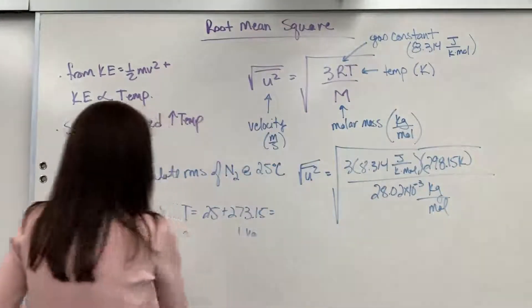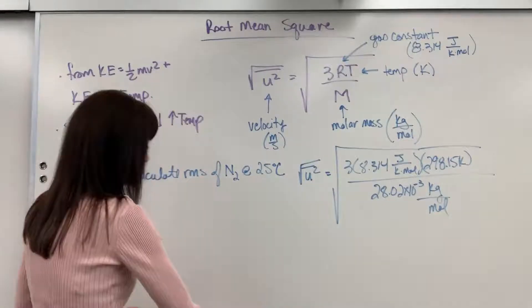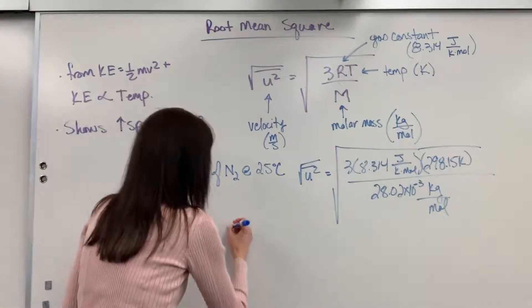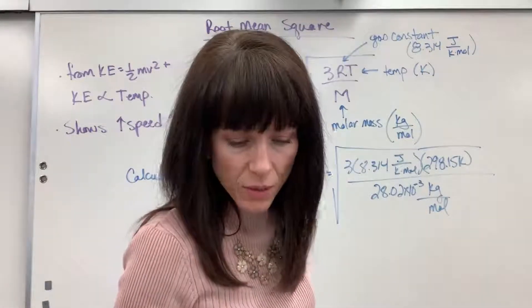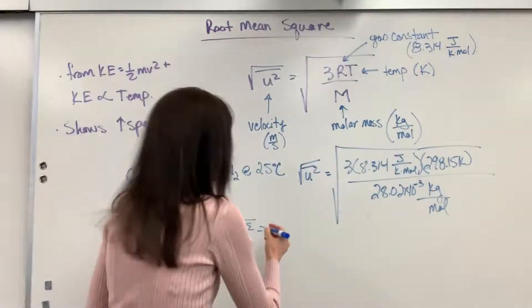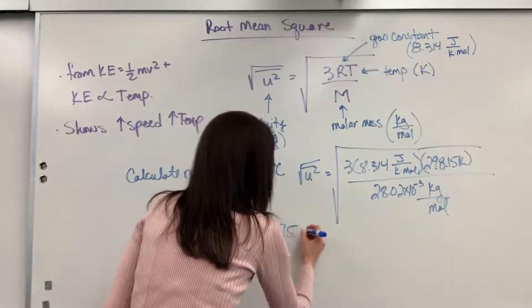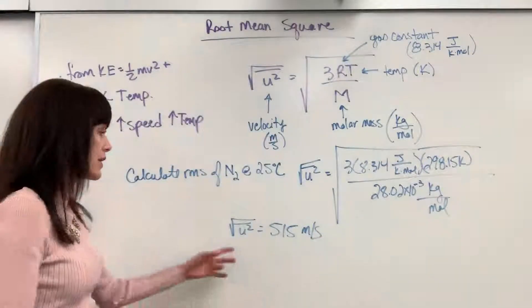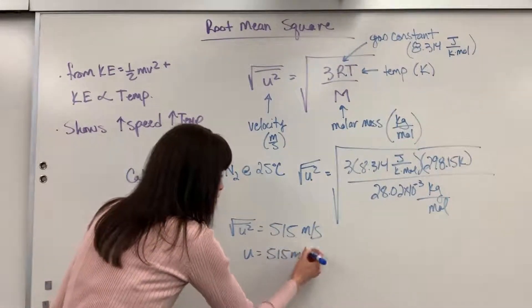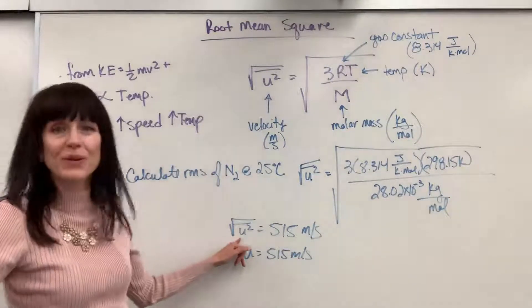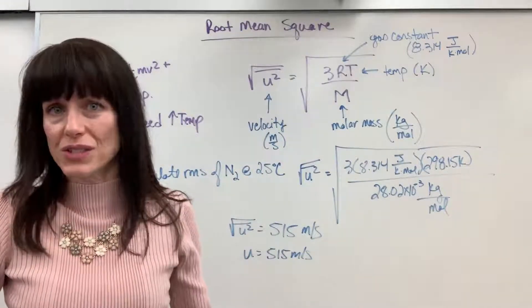So plug all of this into your calculator, and we are going to get that the root mean square on this is 515, and that is going to be meters per second. I could also write this, U equals 515 meters per second, because the square root of U squared is just U. It's just the velocity.